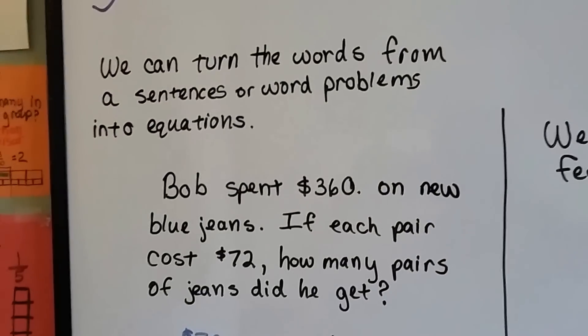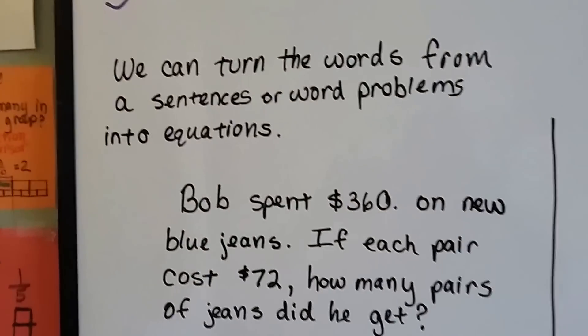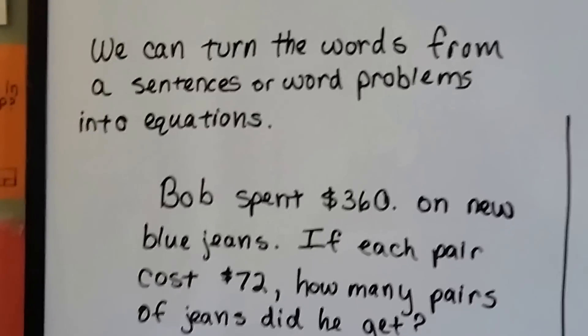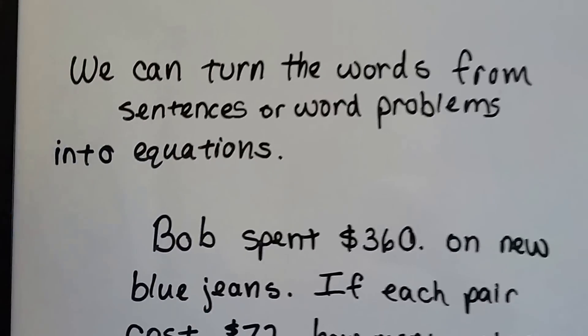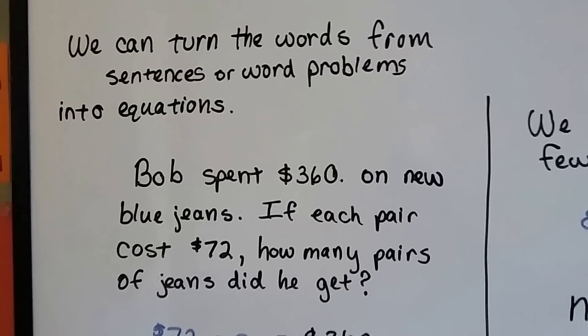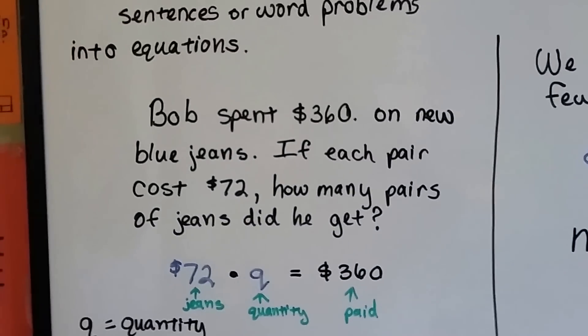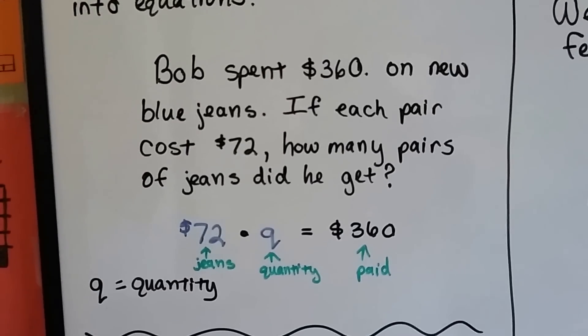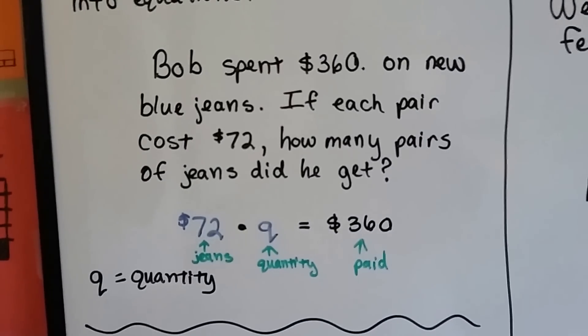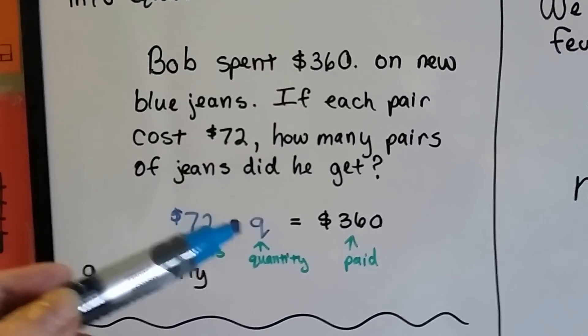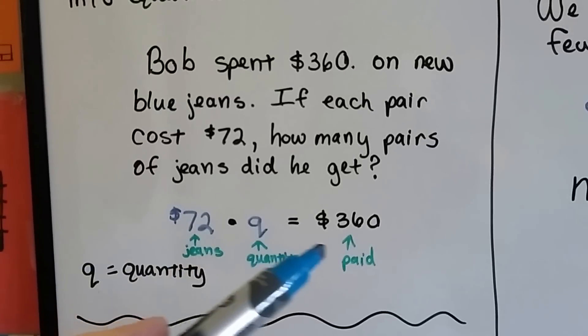So we can turn the words from sentences or word problems into equations. Bob spent $360 on new blue jeans, and if each pair cost $72, how many pairs of jeans did he get? We can do this two ways. We can say 72 times Q, the quantity of jeans, is 360.